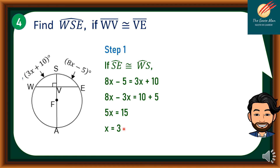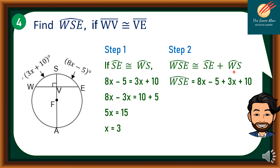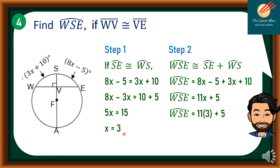Now that X equals 3, Arc WSE equals Arc SE plus Arc WS. Substituting: 8X minus 5 plus 3X plus 10, which simplifies to 11X plus 5. Substituting X equals 3 gives 11 times 3 plus 5, so Arc WSE equals 33 plus 5, which means Arc WSE equals 38 degrees.